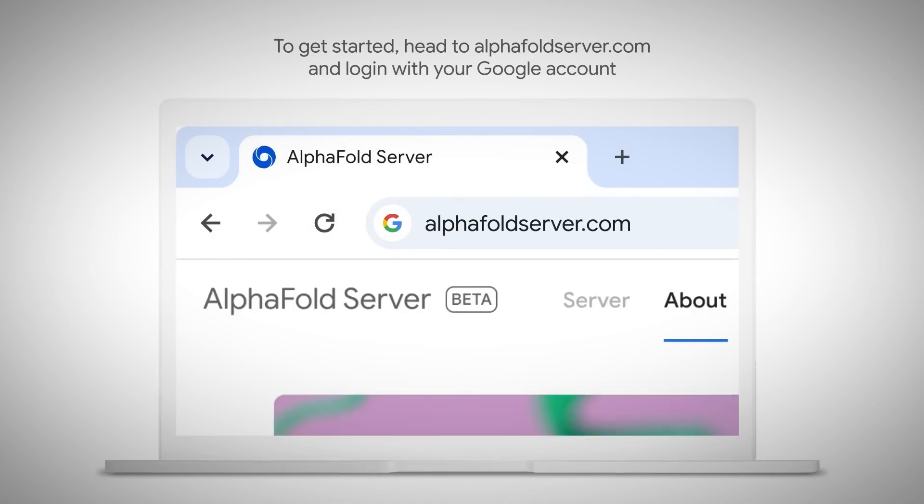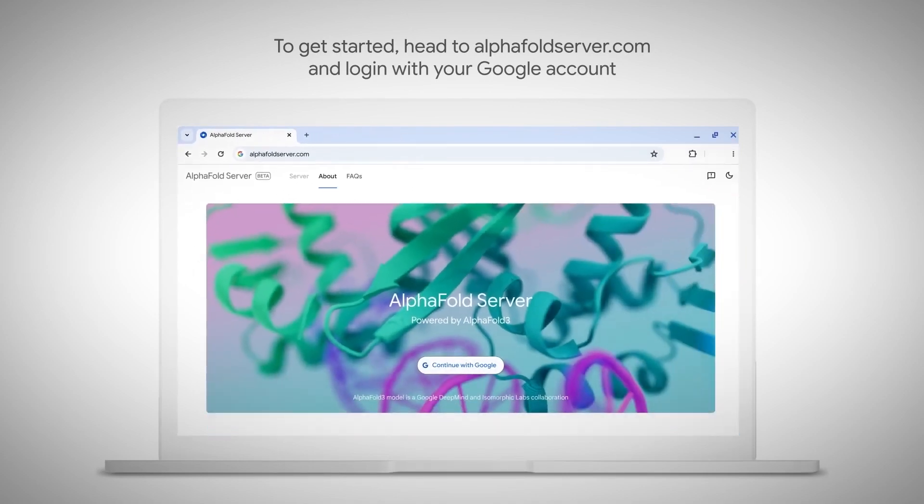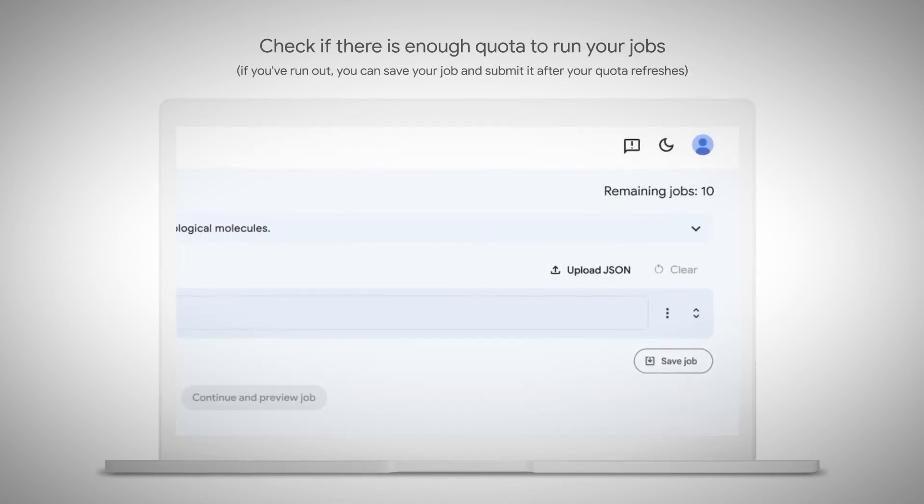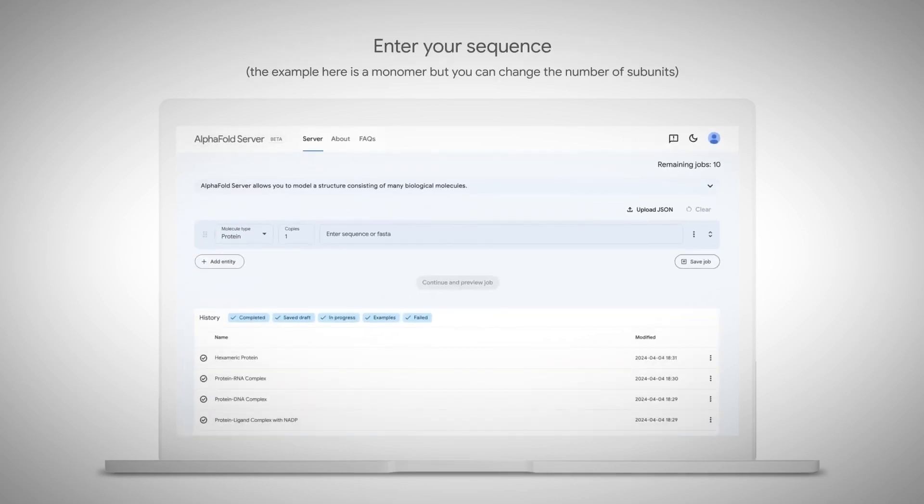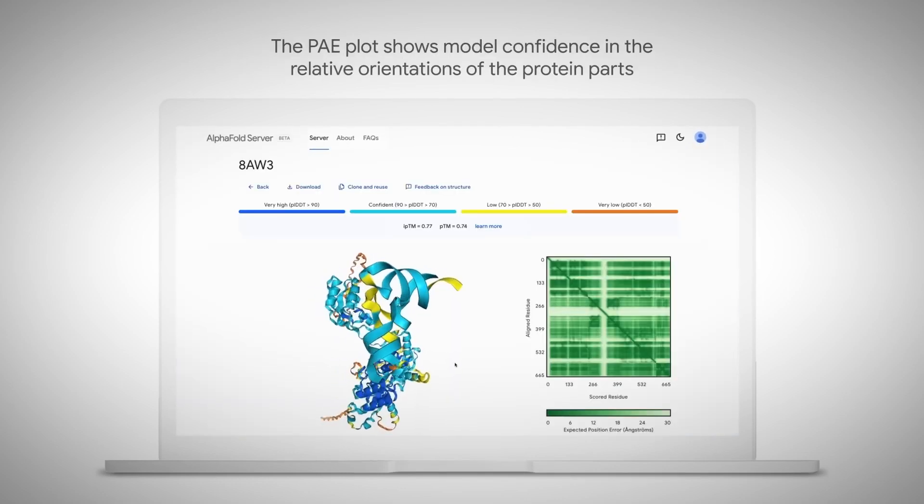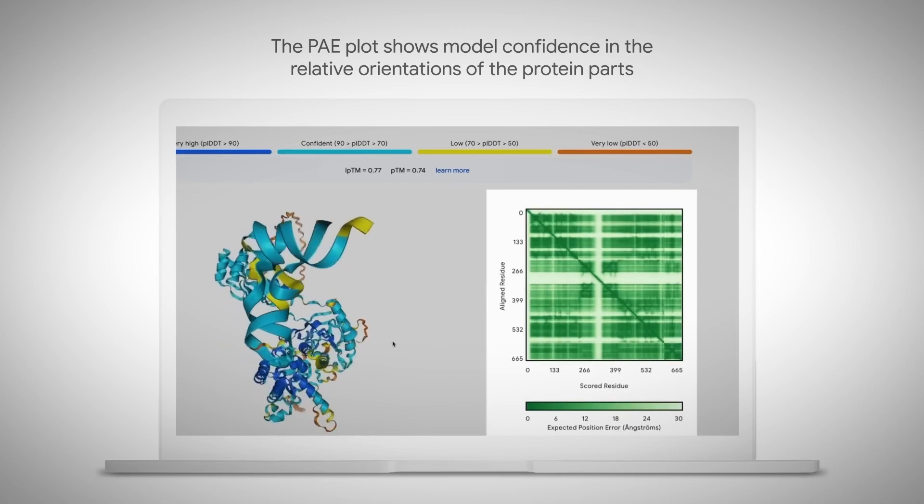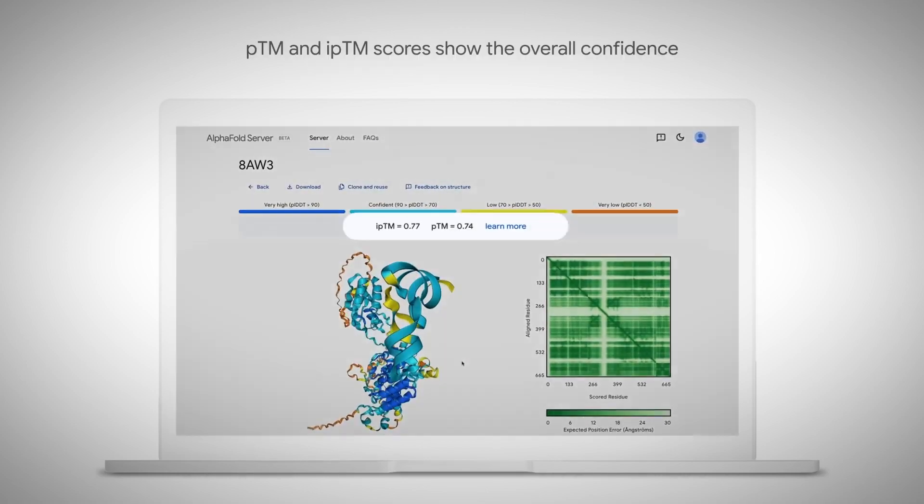To make AlphaFold3 widely available, DeepMind has launched a free online platform that allows scientists to easily use AlphaFold3's capabilities for non-commercial research projects with just a few clicks, without needing advanced computing resources or expertise in machine learning.